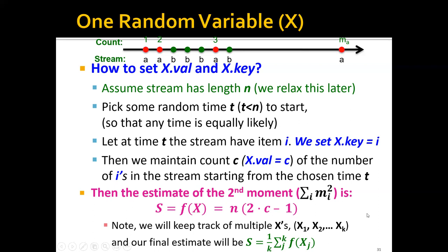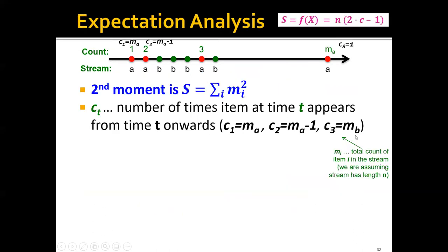Now let's analyze why this is a good idea — why we can estimate the second moment using n*(2c-1). We're going to prove that this estimate is an unbiased estimate of the second moment of the data stream. By unbiased, we mean that if we take the expectation of this estimate, it will be exactly equal to the true value, which is the sum of m_i squared.